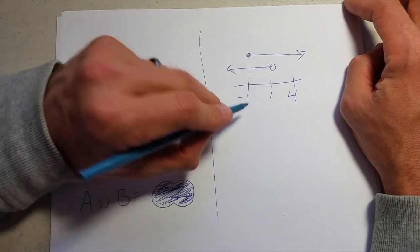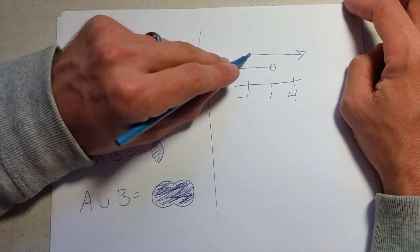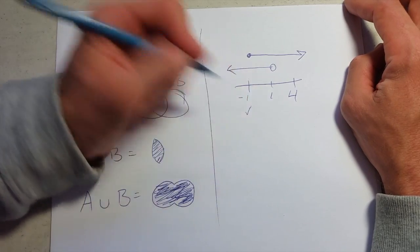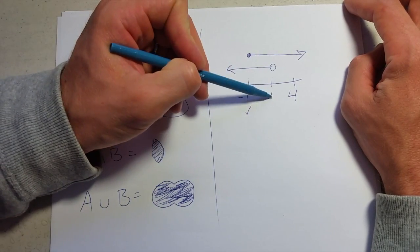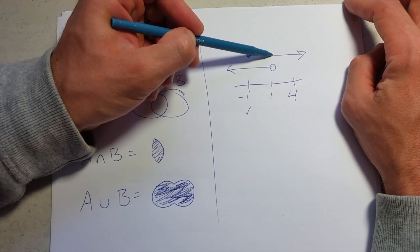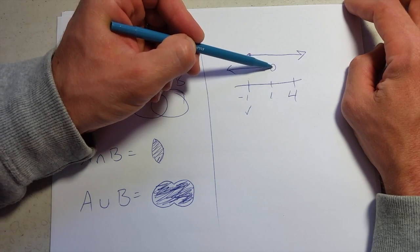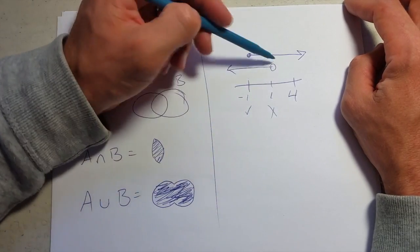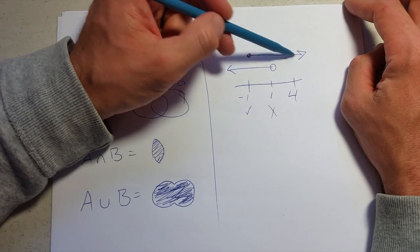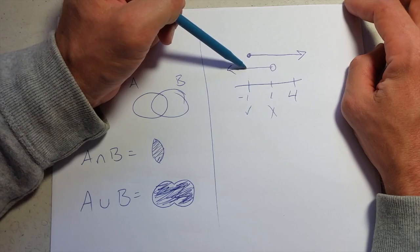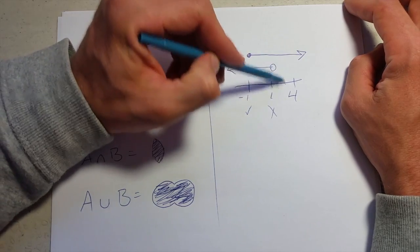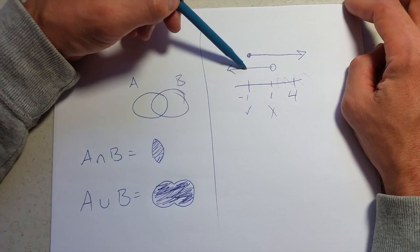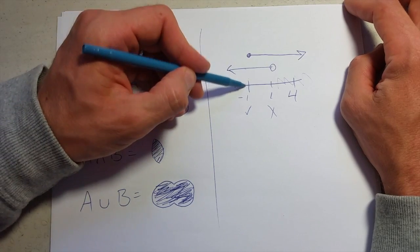Now the endpoints—negative one is in both sets, so negative one makes it in. What about positive one? Positive one is in this set, not in this set, so positive one does not make it in. And everything over here greater than one is not in this set, so this is all out. And everything less than negative one is also out.